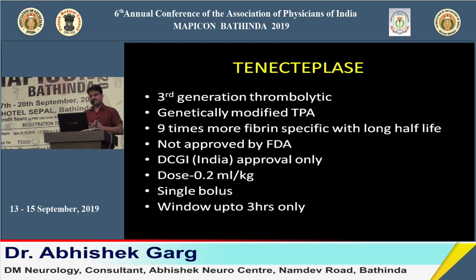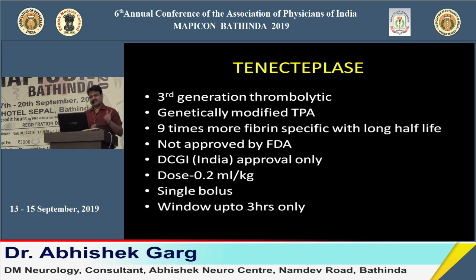Tenecteplase is a newer, genetically modified tissue plasminogen activator that is nine times more fibrin-specific, but data are insufficient and the FDA has not approved it for acute ischemic stroke. It is already used in acute myocardial infarction. DCGI India has approved it for minor strokes within a three-hour window only.